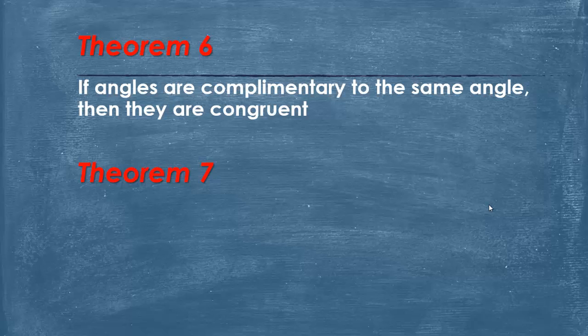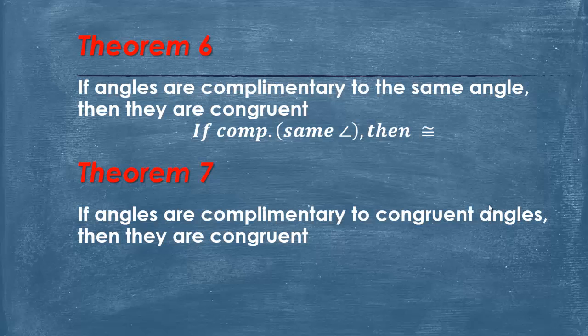So if angles are complementary to the same angle, then they are congruent. Write it this way: if complementary, same angle, then congruent. And theorem 7 is: if angles are complementary to congruent angles, then they are congruent.